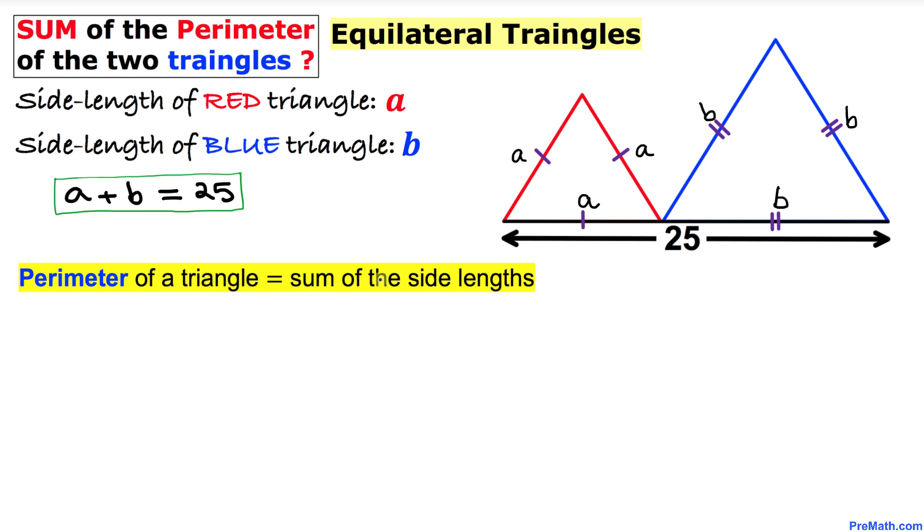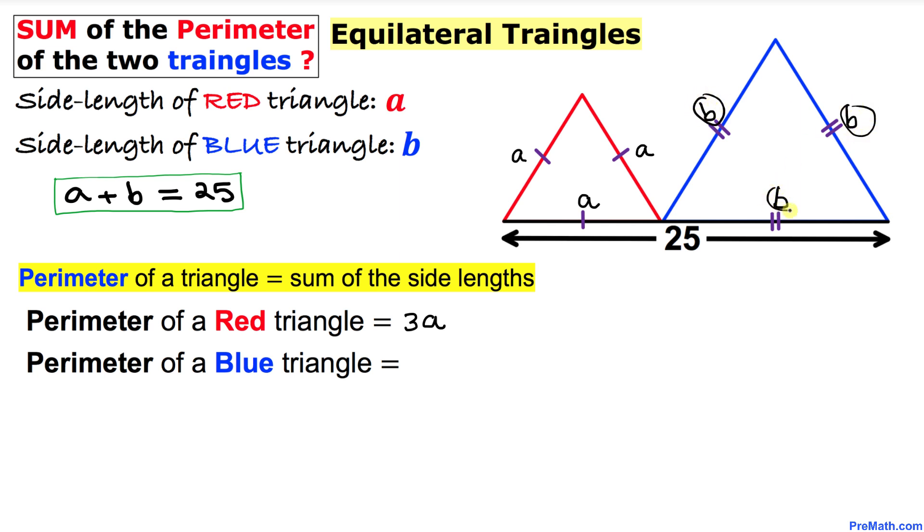The perimeter is always equal to the sum of its side lengths. So therefore the perimeter of this red triangle is going to be a plus a plus a, which is 3a. And likewise the perimeter of this blue triangle is going to be b plus b plus b, that is 3b. So the sum of their perimeters is going to become simply 3a plus 3b.